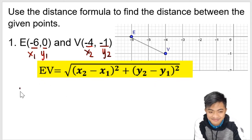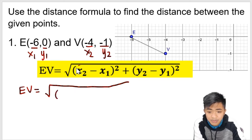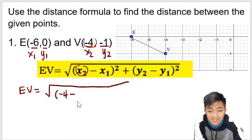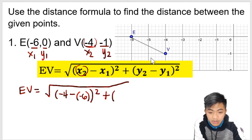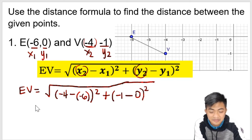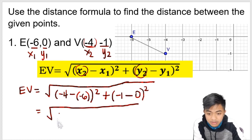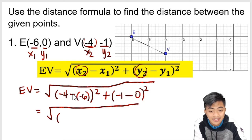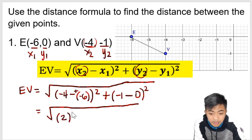Let's substitute it. The distance from point E to point V: x₂ is −4, minus x₁ which is −6 — don't forget to put parentheses — that quantity is squared; plus y₂ which is −1, minus y₁ which is 0, and don't forget to square that as well.